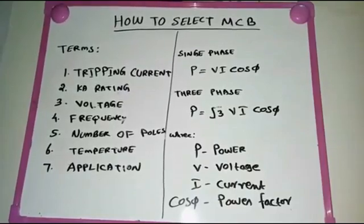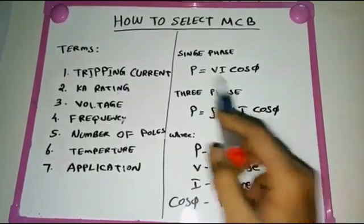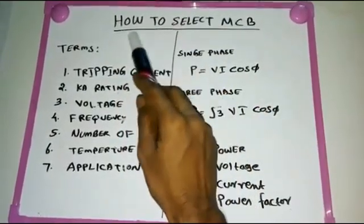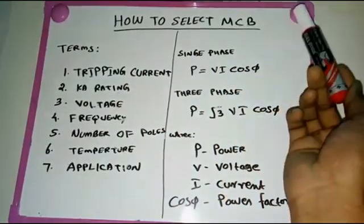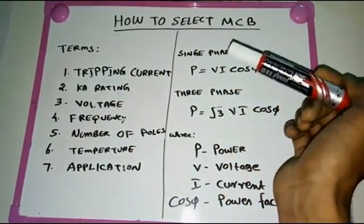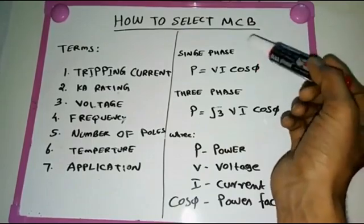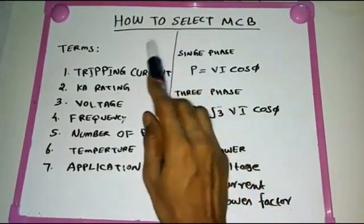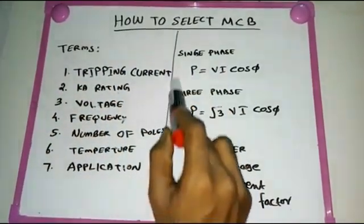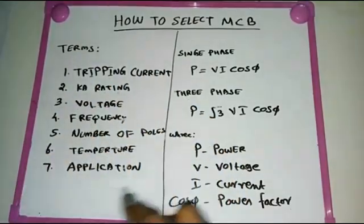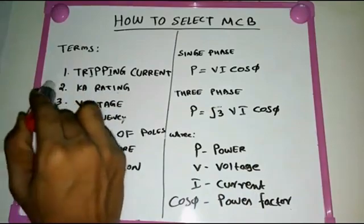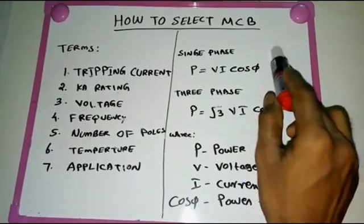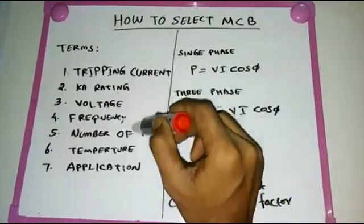Now we are going to see how to select an MCB — miniature circuit breaker — based on load. This is not a simple single-word answer; selecting a circuit breaker requires considering several terms. We need to use a formula — single phase or three phase — based on load to select the MCB.